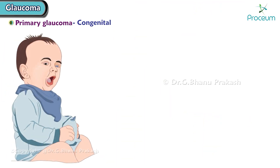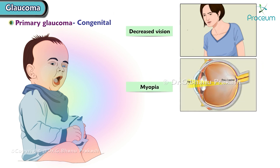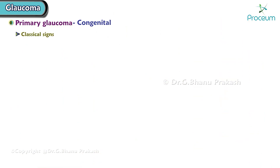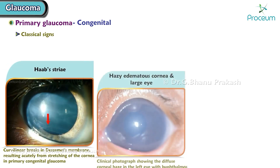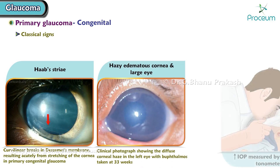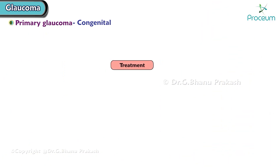A child can also show features of decreased vision, myopia, and strabismus. Classical signs of congenital glaucoma are Haab's striae, hazy edematous cornea, and large eye. Increased intraocular pressure is measured by the Perkins tonometer. Treatment: beta blockers are the first line of treatment.